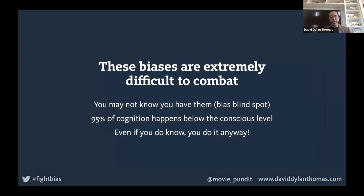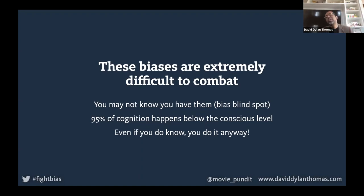These biases are really hard to fight. One problem is you may not even know you have them — there's even a bias called the bias blind spot, where you think you don't have any biases but you're sure everybody else does. Part of the reason they're so hard to spot is that something like 95% of cognition happens below the conscious level. I'm actually writing a book about this called Design for Cognitive Bias — when I did the research I found it's actually 95%, not 90%.